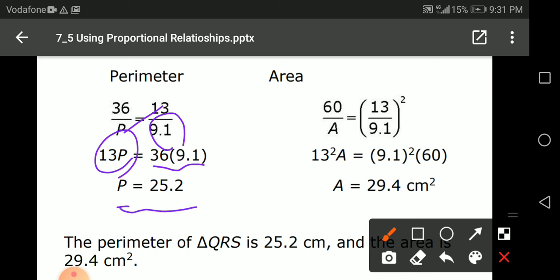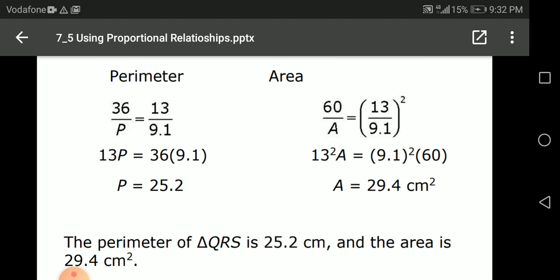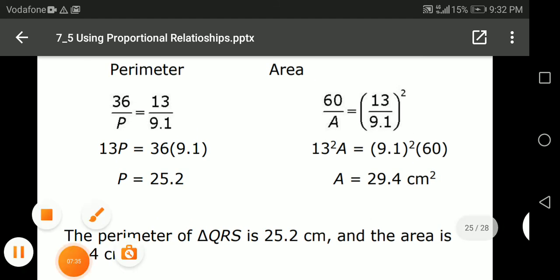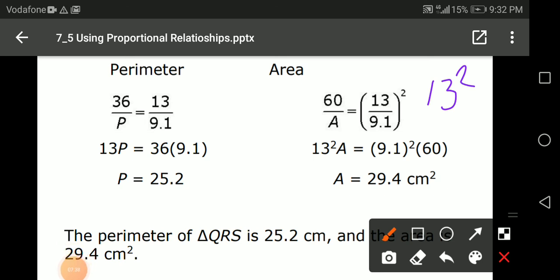What about this one? I have here the area. The area, the same as the perimeter but squared. The ratio will be squared. 60 over the area equals 13 over 9.1 squared. Cross multiplication, 13 squared times A equals 9.1 squared. This is important. 13 squared and 9.1 also squared.